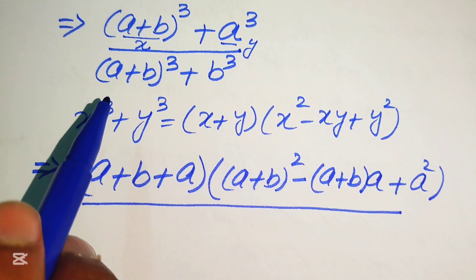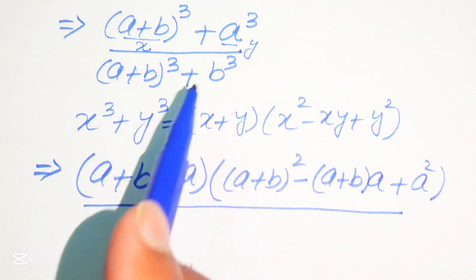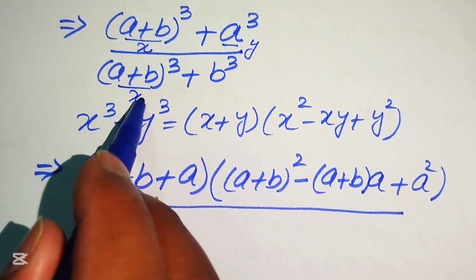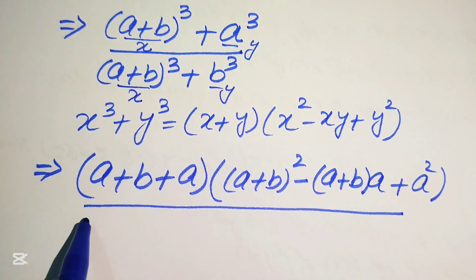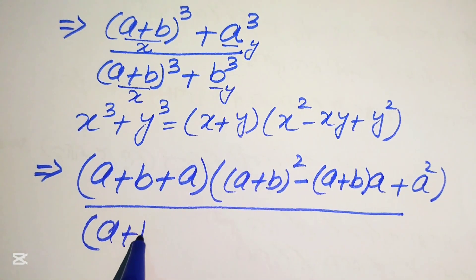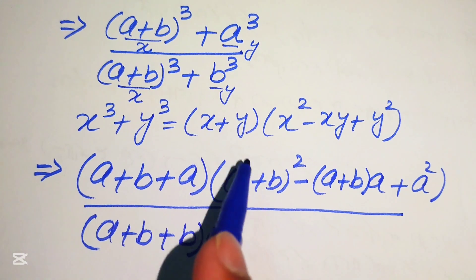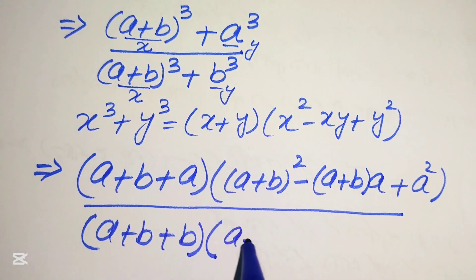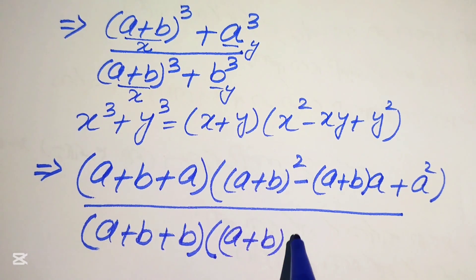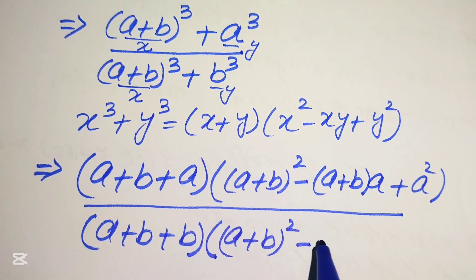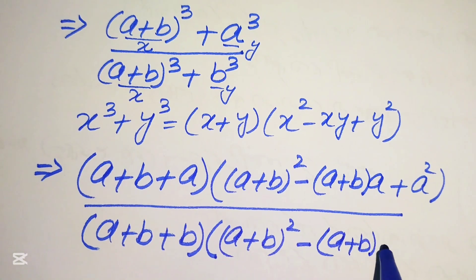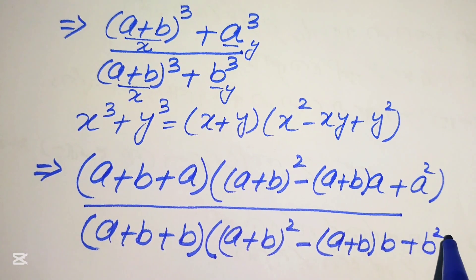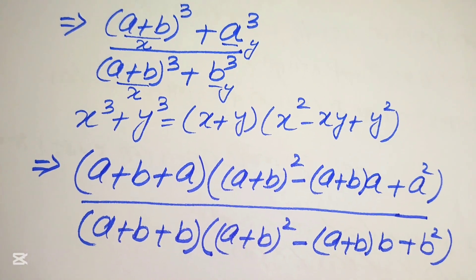We apply the same formula to the denominator term a cubed plus b cubed. Here x is (a plus b) and y is b, so the denominator becomes: (a plus b plus b) times [(a plus b) squared minus (a plus b)(b) plus b squared].